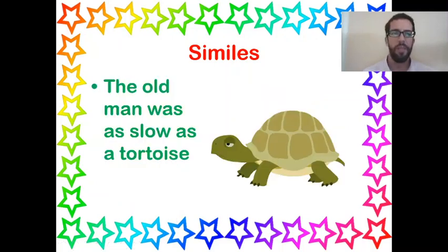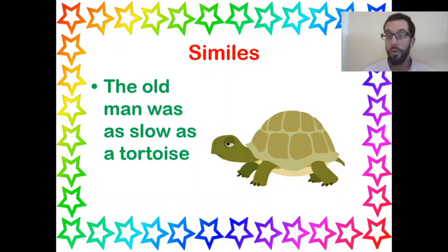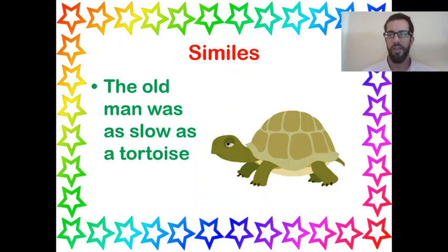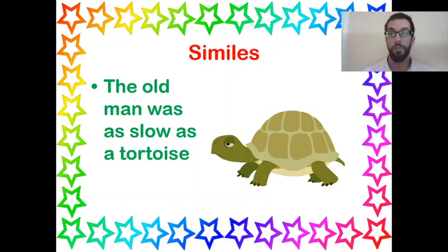'The old man was as slow as a tortoise.' Tortoises are incredibly slow creatures. So if I read in a book that this man was as slow as a tortoise, I would imagine this old man to be very, very old, quite hunched back, possibly walking with a walking stick and literally moving a couple of centimeters at a time, really incredibly slow. Rather than just saying it was an old man, the simile gives the impression that this man was not just old but very, very old and moved incredibly slowly.